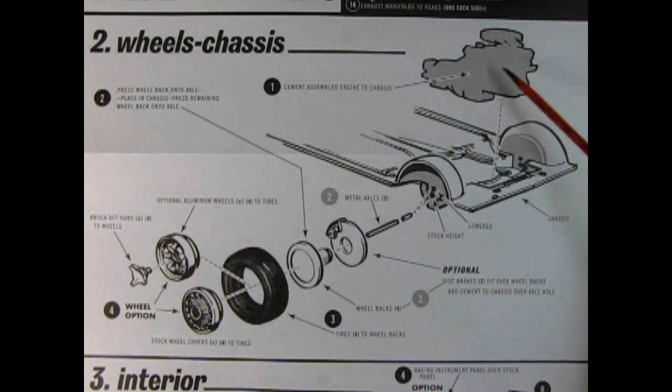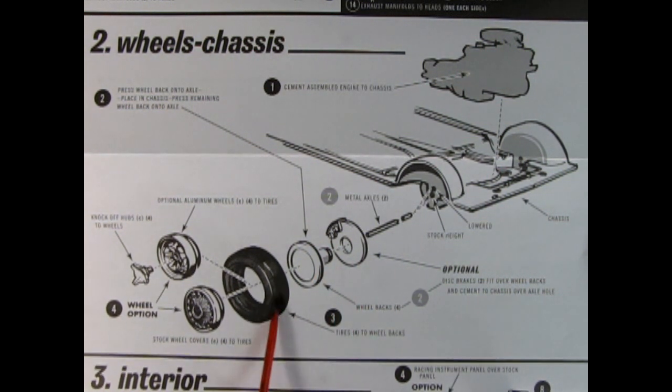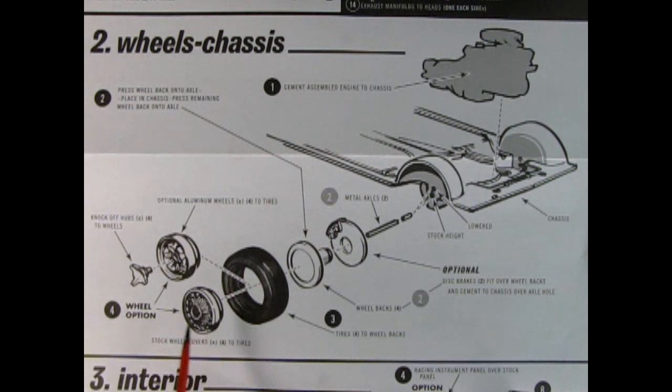So here we have the completed engine of your choice being dropped into the chassis, which is a one piece pan. We also have the metal axles. You have the option of adding on the disc brakes, which just slip onto those wheel backs. We have the tires as well as your choice of the stock hubcap or the two piece knockoff aluminum wheels.